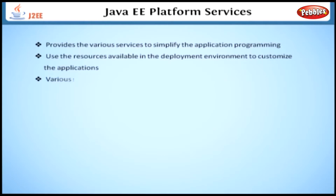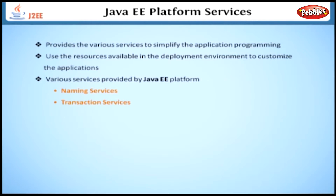The various services provided by the Java EE platform are: Naming services, Transaction services, Deployment services, and Security services. Let's look at each service in detail.